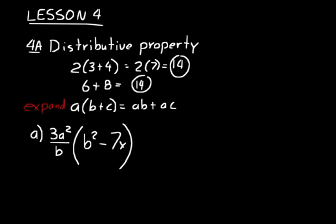So look at practice problem A. Let's expand that relationship. And so that means we'll take the 3a squared over b, and we multiply it by each term on the inside of the parentheses. So we say 3a squared over b times b squared. And that would give us 3a squared b squared over b, everything over b.